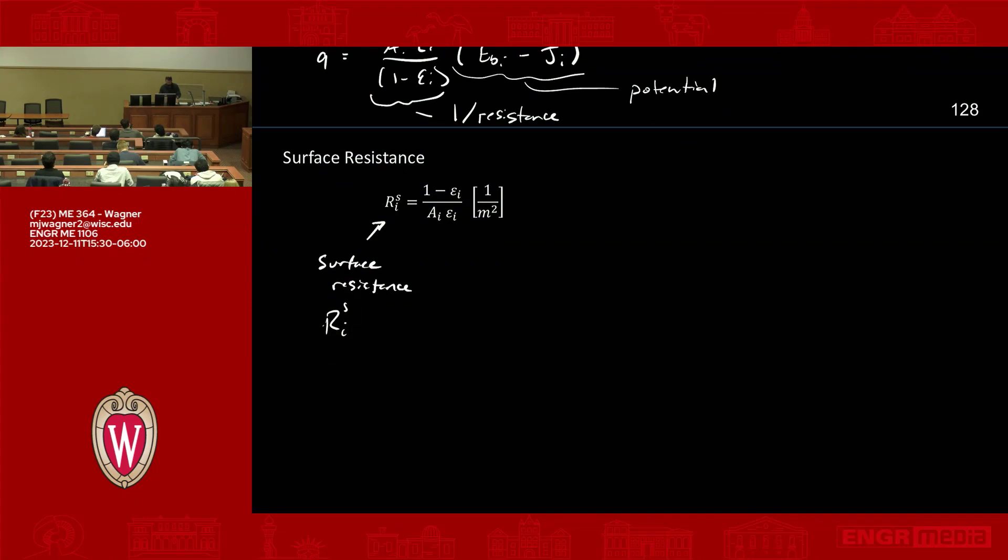What can we maybe notice about this? So when emissivity goes to one, what happens here? So we have this situation, it would be one minus one, emissivity of one over AI times one. So this goes to zero. Resistance goes to zero. So that sort of makes sense. Like intuitively, when it's a black surface, there's no impedance to heat flow compared to the theoretical. So there's zero resistance there. So that kind of makes sense.